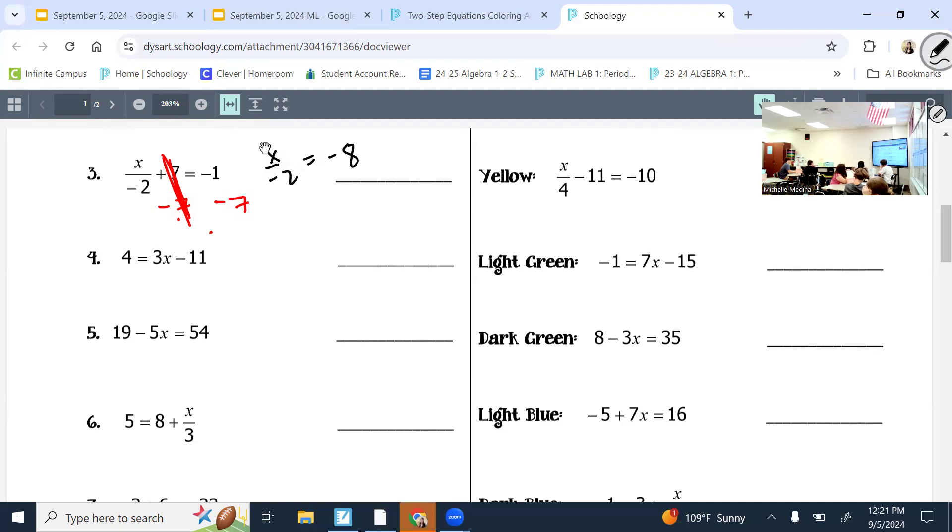Then I get just the x over negative 2 on the left, because this cancelled. On the right, we need to simplify. What's negative 1 minus 7? Negative 8. Now, we're not done. It's being divided by negative 2. What's opposite of doing that? Multiply by negative 2. X is now alone. And what's negative 8 times negative 2. 16. So, that's how we isolate.